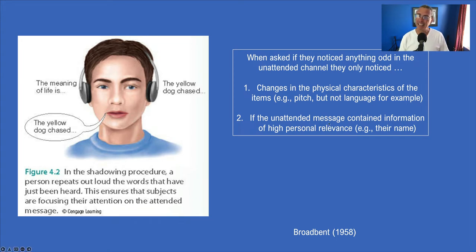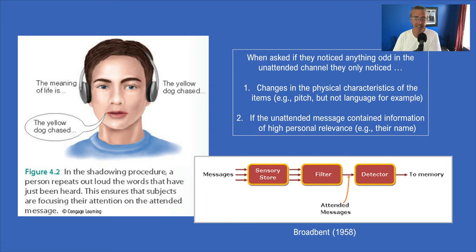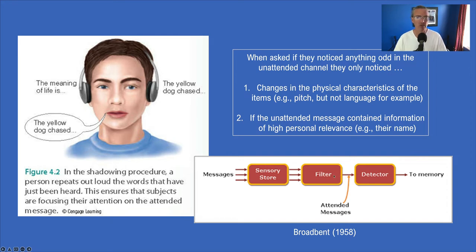There's one other thing that was part of the cocktail party phenomenon: if the unattended message contained something of high personal relevance — usually your name — participants would often notice it. The idea was that you must be processing the unattended information a little bit in order to pick up your name, but maybe just a little bit — just the physical characteristics. That's Broadbent's filter theory.